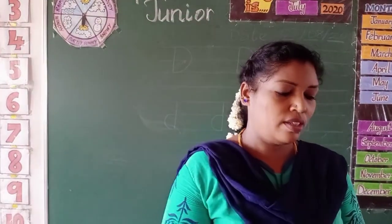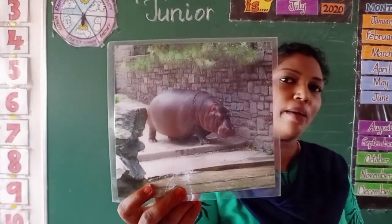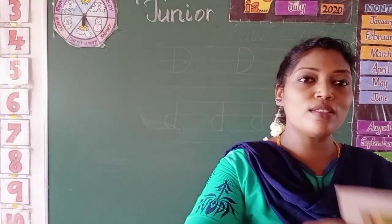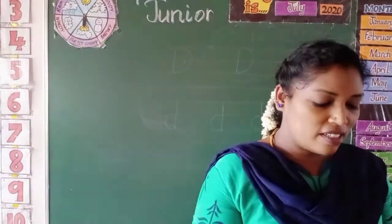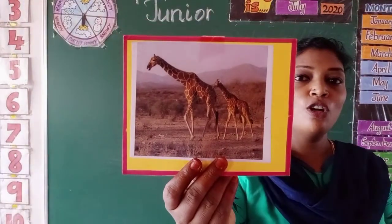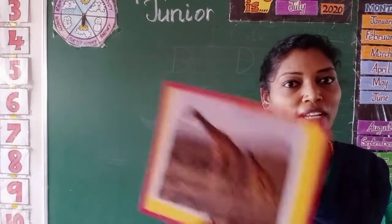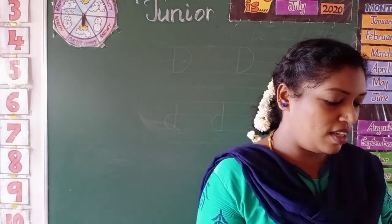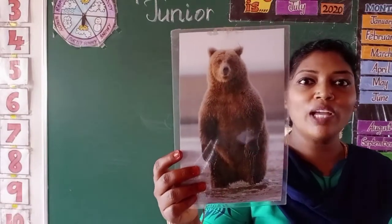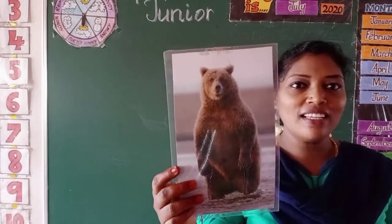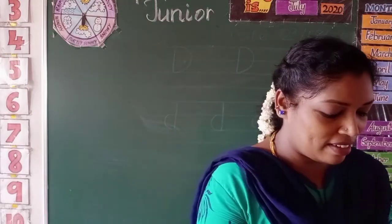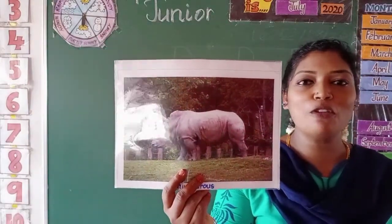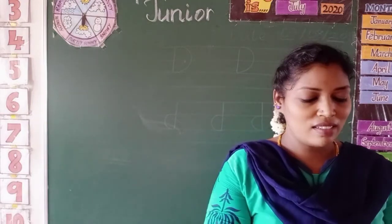It's an elephant. Hippopotamus — this animal is called hippopotamus. Tiger. This one is giraffe, a long-necked animal. Jaguar — it's a jaguar. It's a bear. Have you seen a bear? You can see the bear in Jungle Book — the Mowgli bear! Rhinoceros — this is called rhinoceros, the grey coloured rhinoceros.